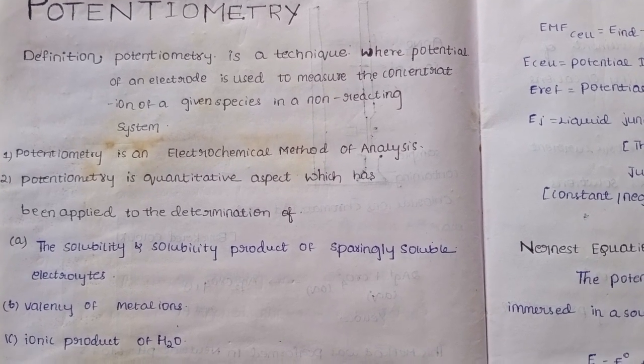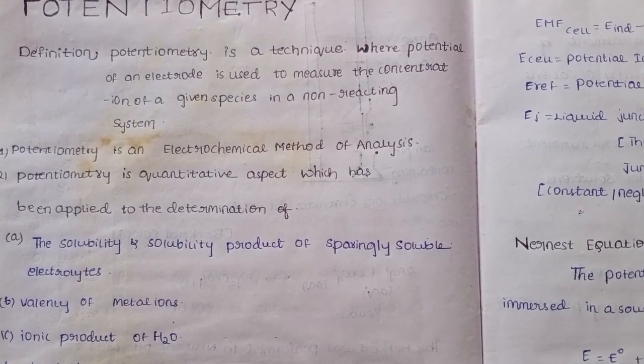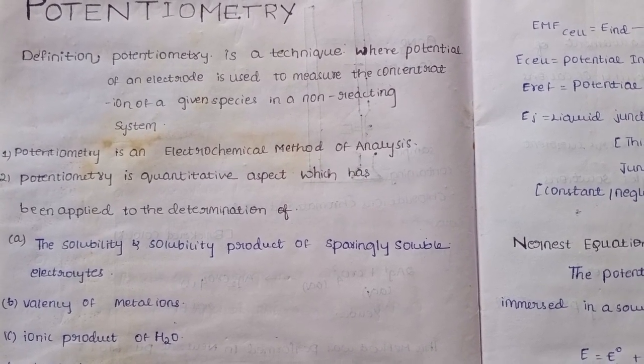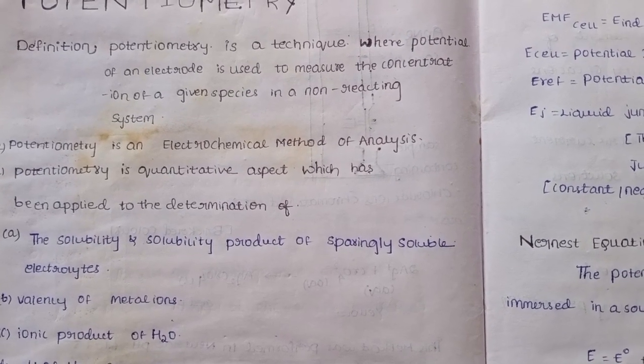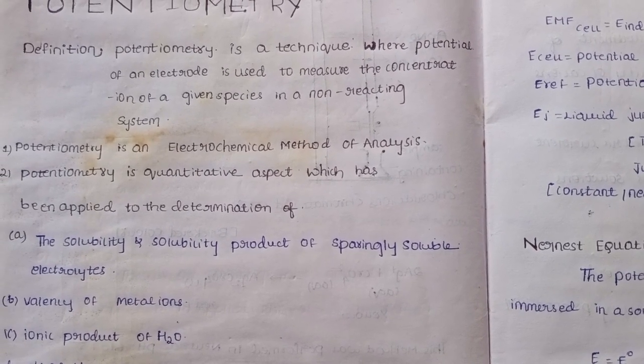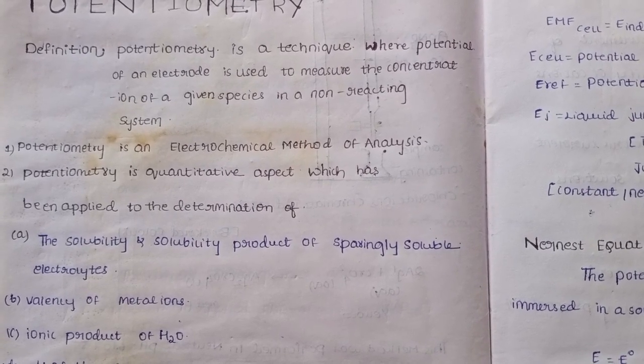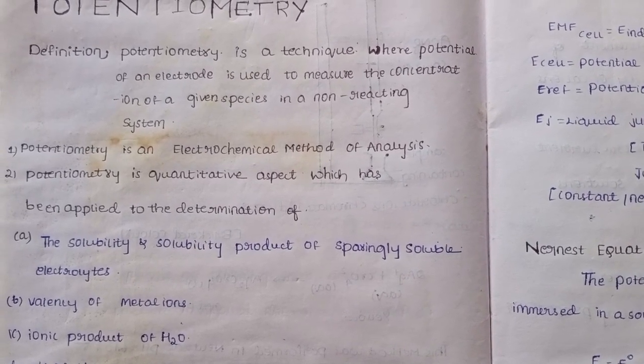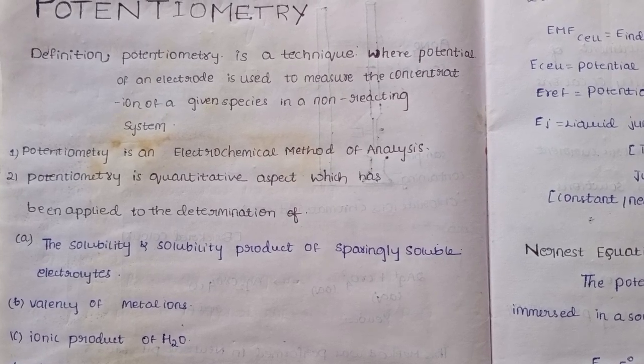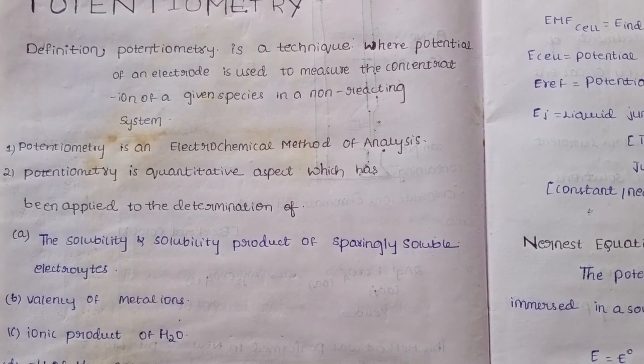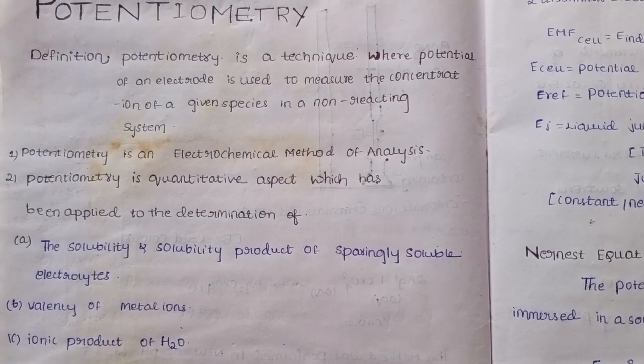Potentiometry is a technique where electrodes are used to measure the concentration of a given species in a non-reacting system. The system is an electrolytic cell with electrodes, and we measure the concentration of ions in the solution.